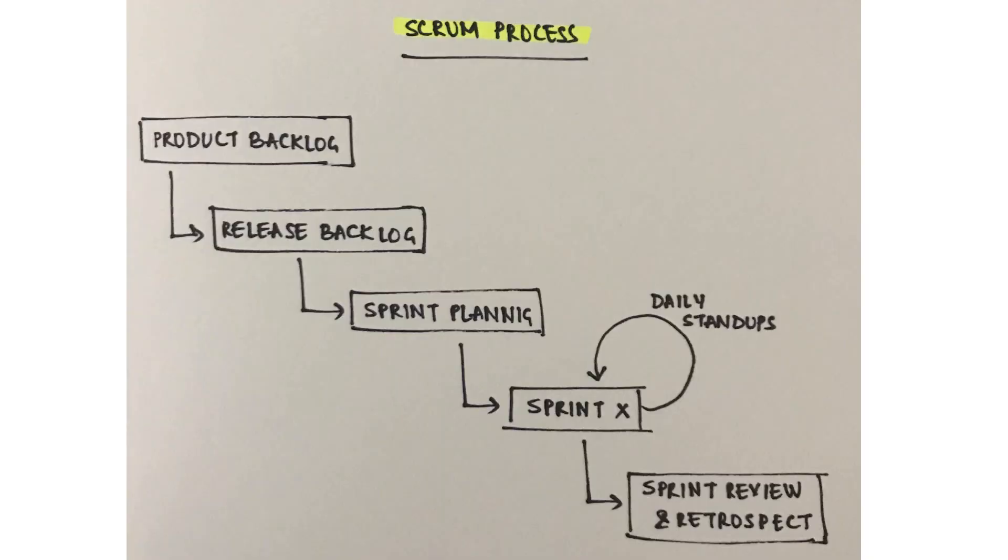So this is what a scrum workflow looks like, typically beginning at the product backlog and then where the product owner makes the release backlog and then sprints are planned by the entire team. Once each sprint begins there are daily stand-up meetings where the plan, the progress and the problems are discussed, and at the end of the sprint a sprint review and a sprint retrospective meeting is done to improve the process overall.